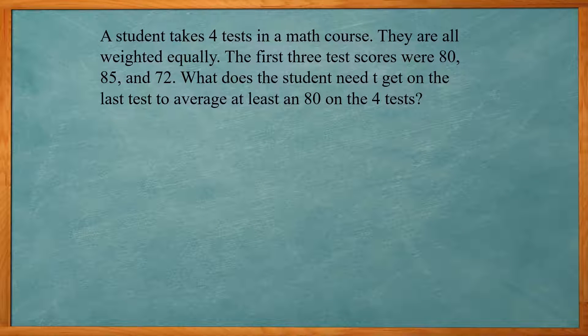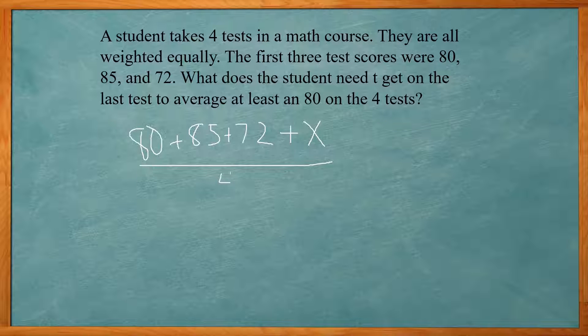In this problem, it reads a student takes four tests in the math course. They are all weighted equally. The first three test scores were 80, 85, and 72. What does a student need to get on the last test to average at least an 80 on the four tests? So remember our average is just add them all together and divide by how many they are. So we know we have an 80, 85, and a 72. And we don't know the last test score. So I'm just going to put in an X for that unknown. And then we're going to divide by four because there's four tests. And we want our average to be an 80.